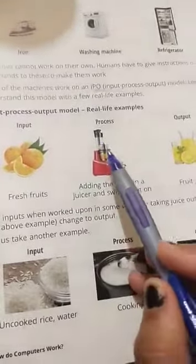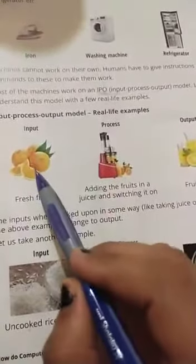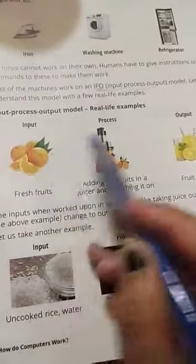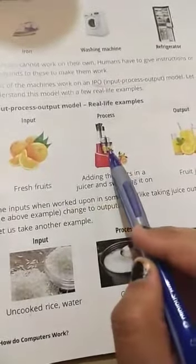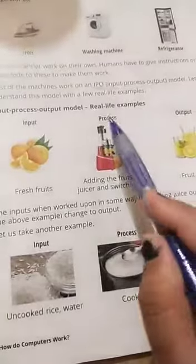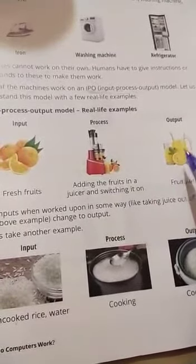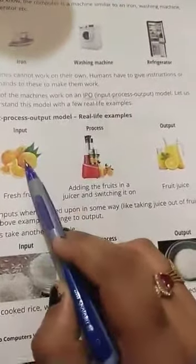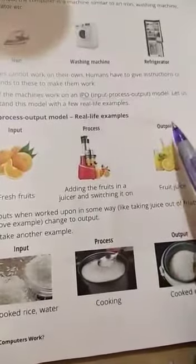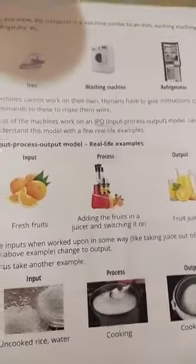So the input in this example is our oranges. We put the oranges into the juicer — that is our process. And what comes out from the juicer is our orange juice, which is our output or result. So this is IPO — I for input, P for process, and O for output. This is the IPO cycle and this is an example of the input process output model.